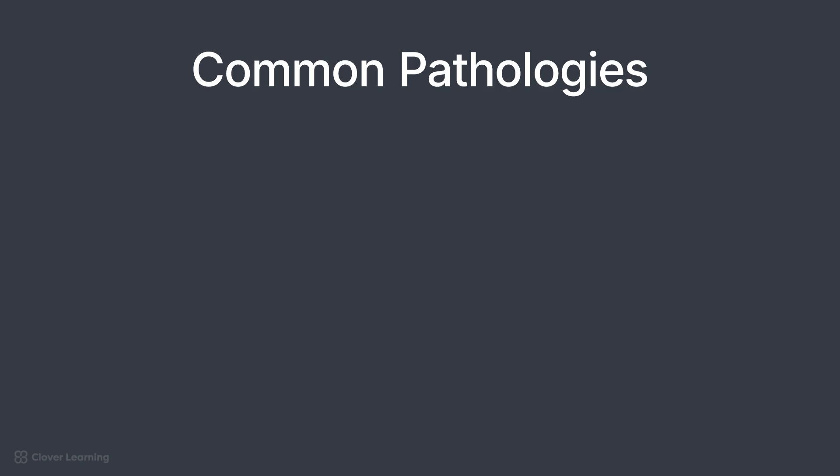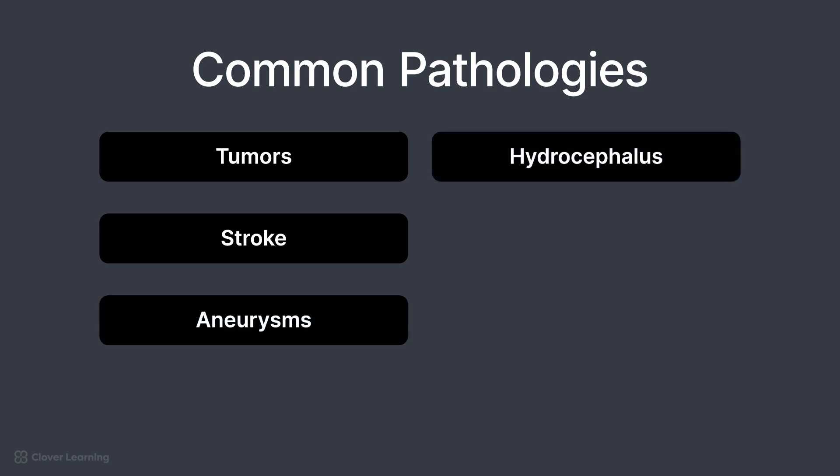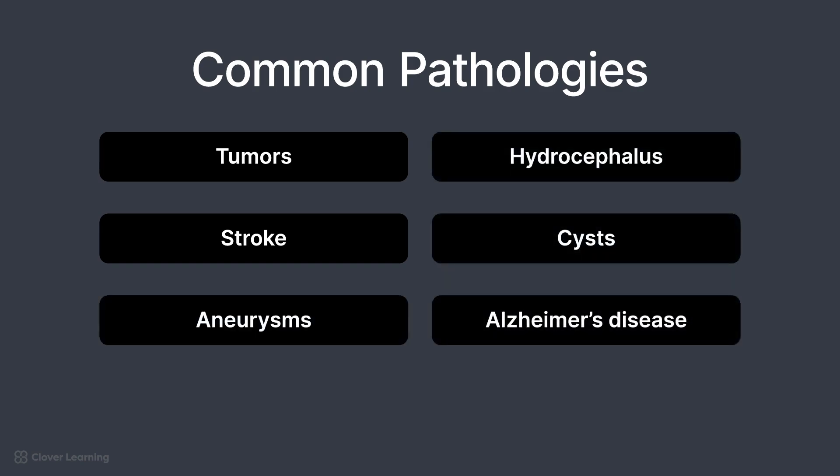In summary, there are many pathologies that may be an indicator for a brain study. Some of the most common are tumors, stroke, aneurysms, hydrocephalus, cysts, and Alzheimer's disease. It is important to be familiar with characteristics of each condition and needed protocol changes to provide optimum images for radiologists.